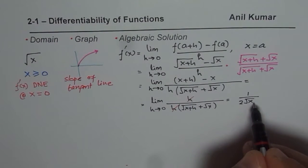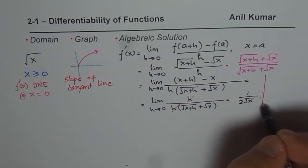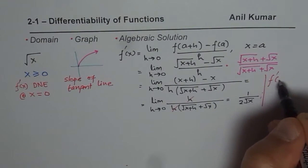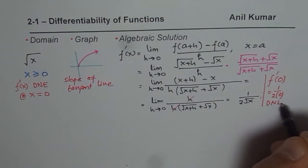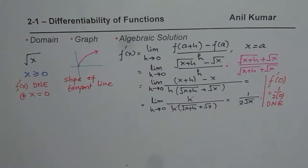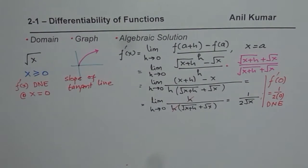Now what happens when x is 0? At 0, f'(0) equals 1 over 2 times 0, which does not exist. So we can see from here that it does not exist, and therefore algebraically we can prove that square root x is not differentiable at the origin. So this is a point where it is not differentiable.